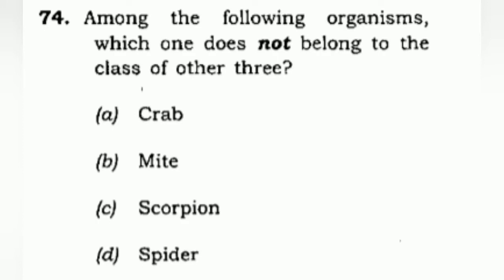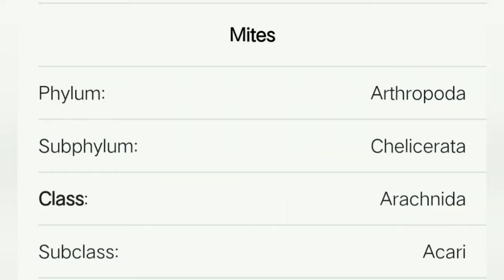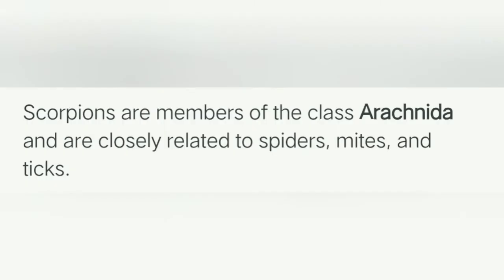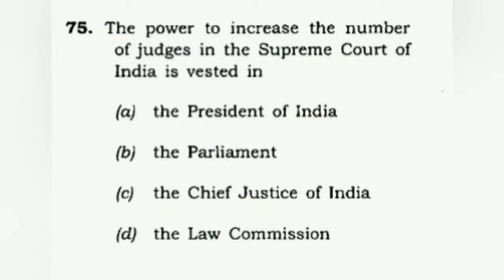Among the following organisms, which one does not belong to the class of the other three? We need to know which classes they belong to. Crabs belong to arthropods. Mites belong to arachnids, and the class is the same for scorpions and spiders. So the correct answer is A: crab, as it does not belong to the class of the other three.